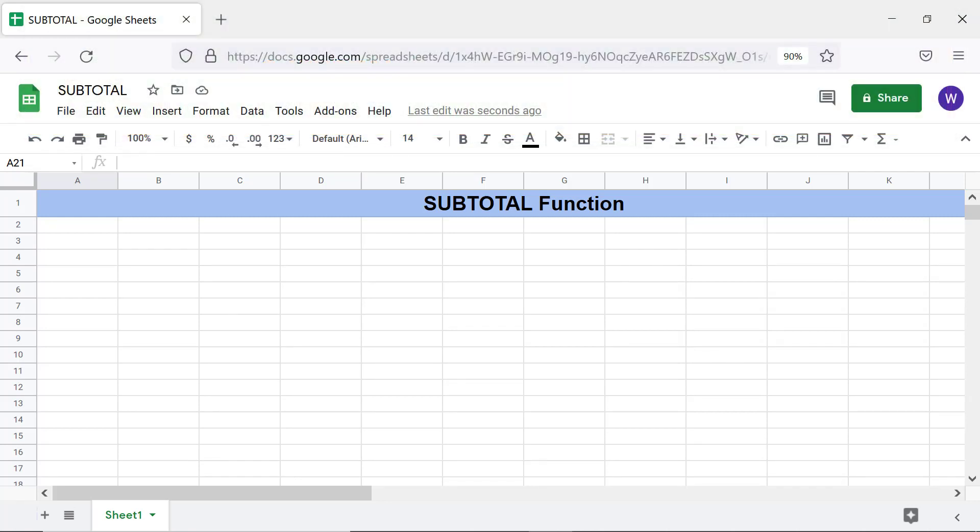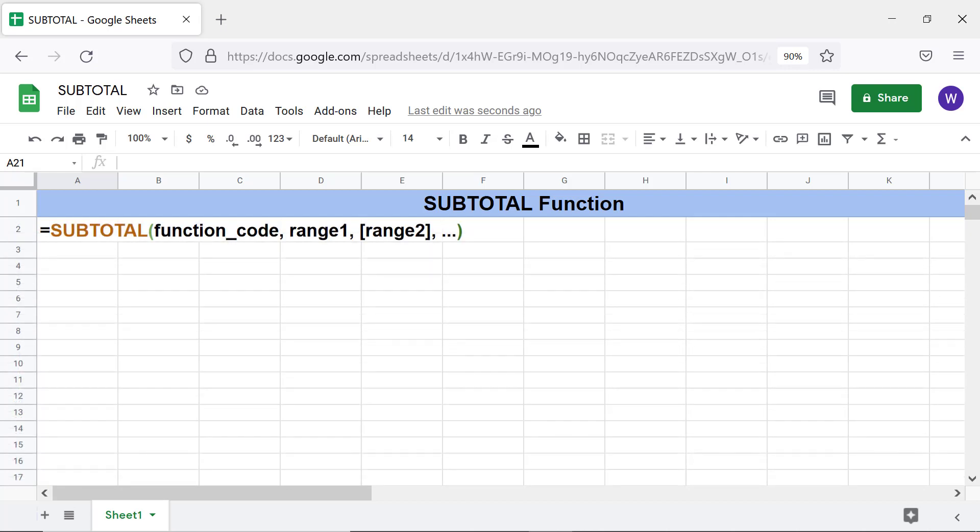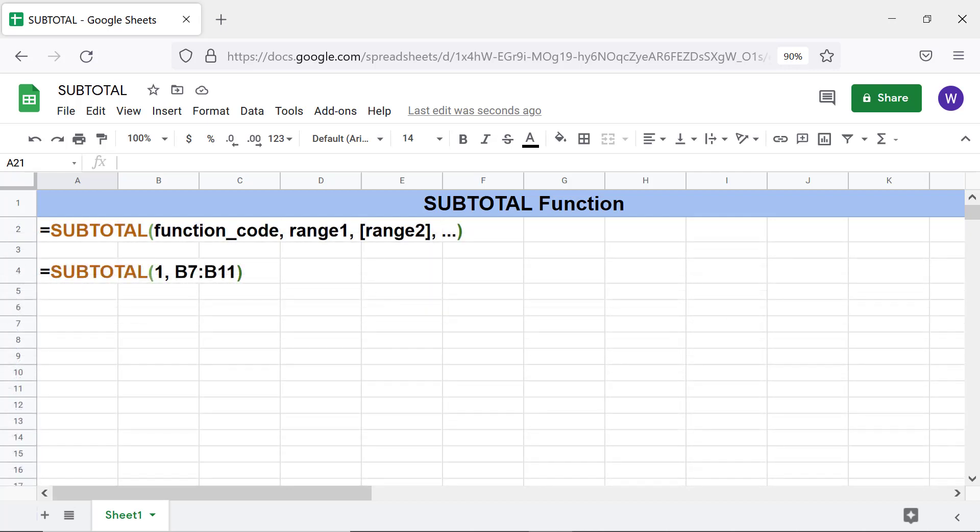Moving forward, let's look at the format of the Subtotal function formula. Here's an example. Function code is the code that represents a particular function. The function code 1 represents the average function. Here are the other functions and their corresponding codes.